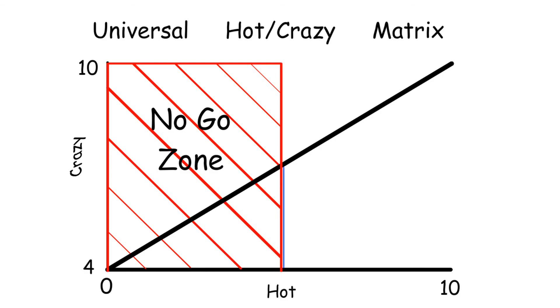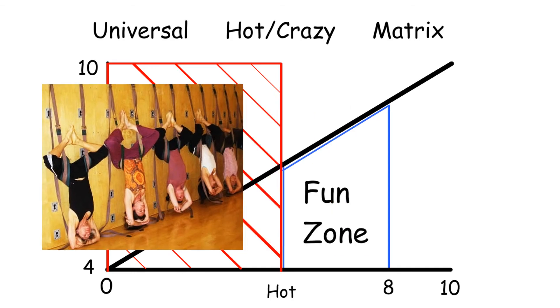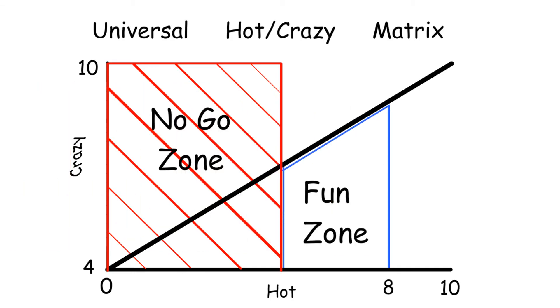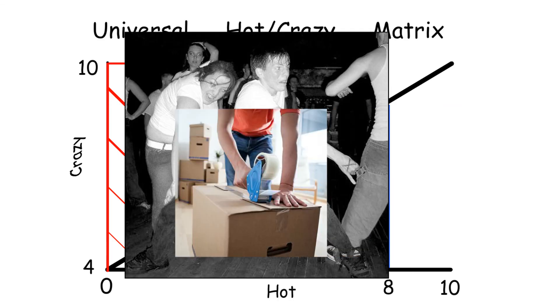Above a 5 and to about an 8, and below the crazy line, this is your fun zone. You can hang out here and meet these girls and spend time with them. But keep in mind, when you're in the fun zone, you want to move out to a more permanent location.